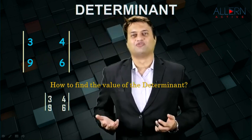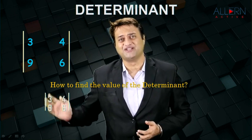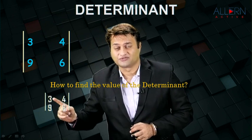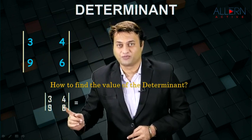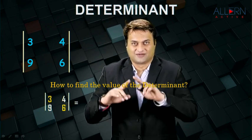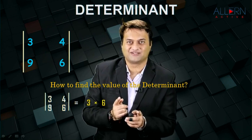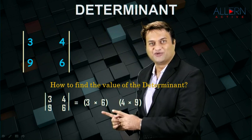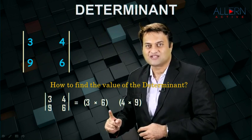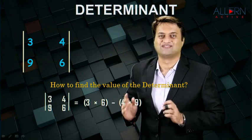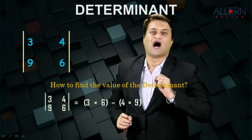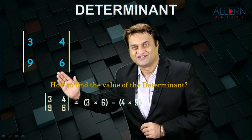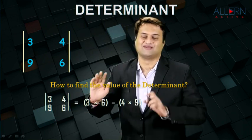Now how do we find the value of a determinant? It is very simple — you just need to cross multiply. But remember, the cross multiplication should start from here, that is from three — it is compulsory. So your first product will be three into six, that would be in the first bracket: three into six. Then the next bracket will be four into nine. So the first bracket is three into six, the next bracket is four into nine. Just don't forget to put the minus sign in between — that's the rule. So that's how you find the value of a determinant: three into six minus four into nine, as simple as that.